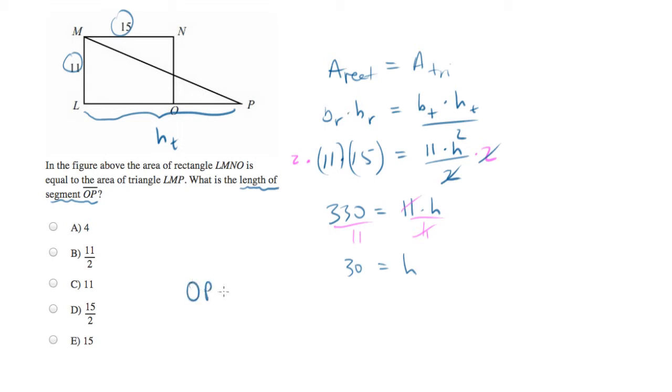Length of OP is equal to the length of LP minus LO. Right? So it's the whole height of the triangle, which we know is 30. We know that LP is 30 minus LO, which we know is 15 from the rectangle. It allows us to calculate that OP equals 15.